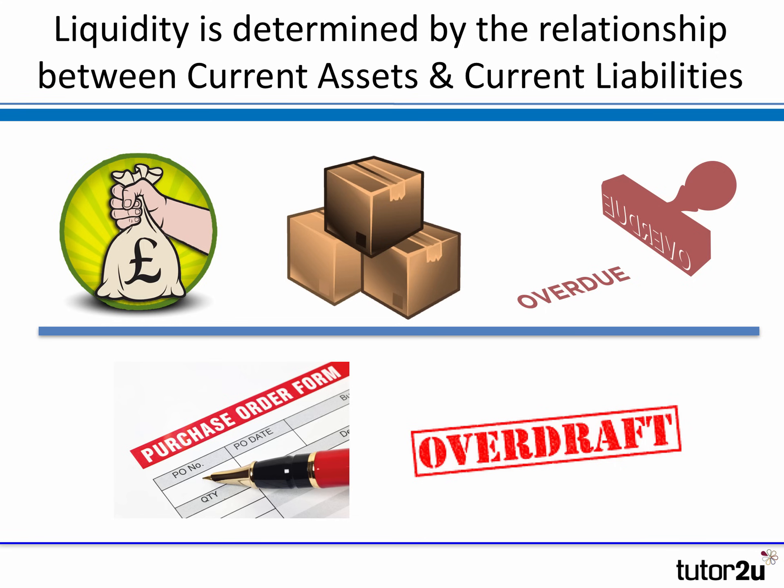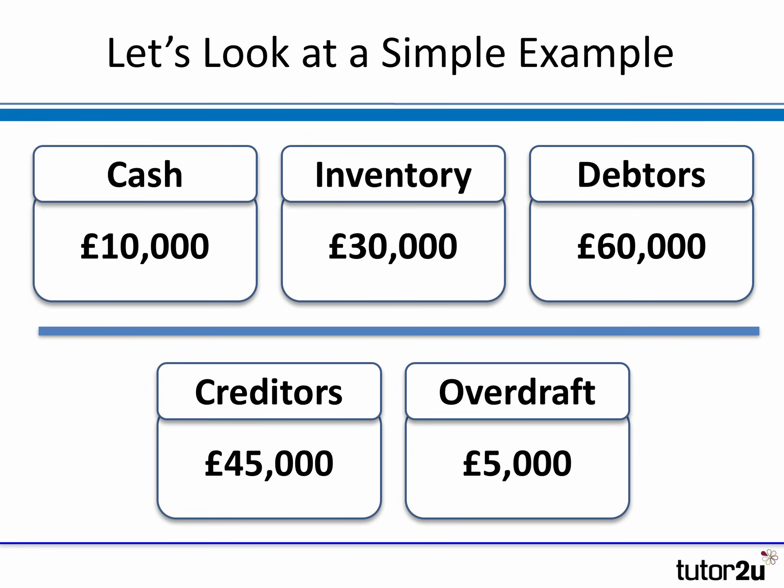We compare current assets with current liabilities to see the relationship between the two. Here's a simple example from the balance sheet: cash in hand of £10,000; stocks or inventories at cost of £30,000; trade debtors of £60,000 owed by customers. On the liabilities side, the business owed trade creditors £45,000 and had a £5,000 bank overdraft.